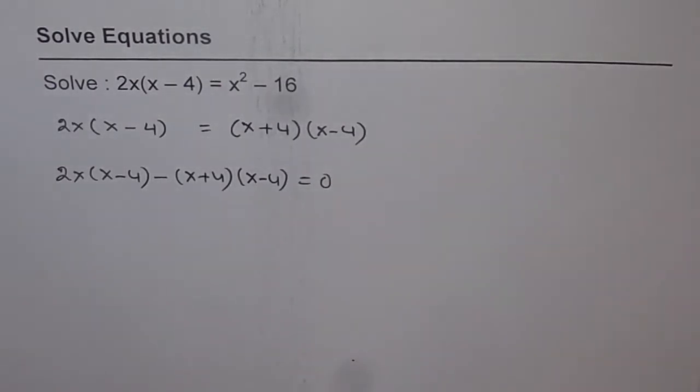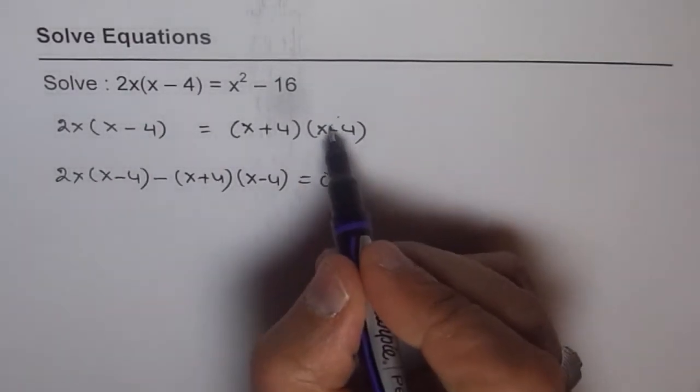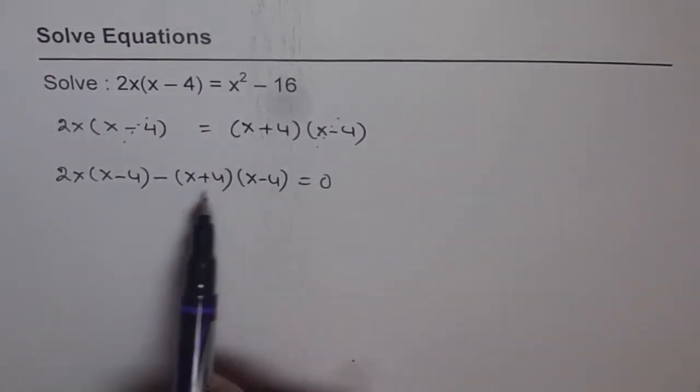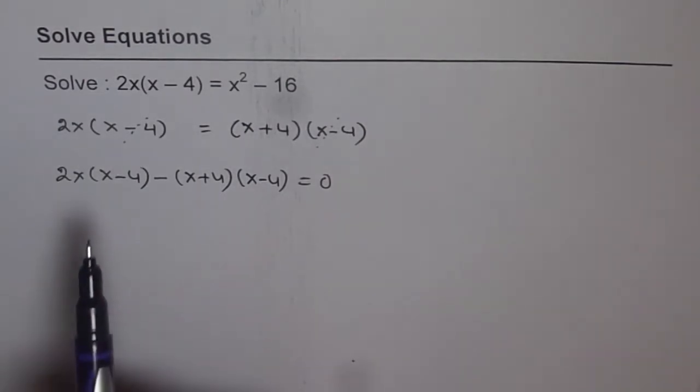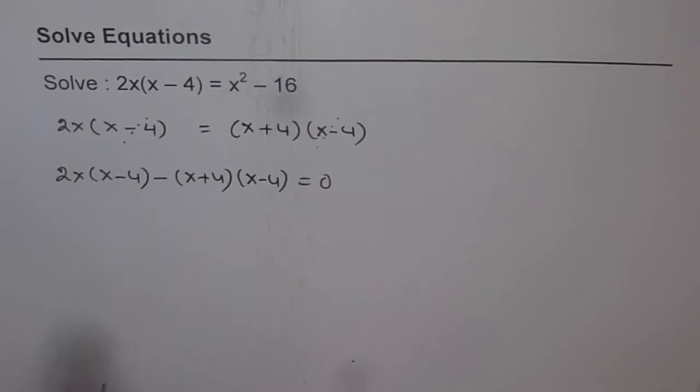Now I have seen at this stage some of the students making a mistake. So what they do is when they are trying to solve the equation, they cancel out these terms. If they cancel this out and then bring this x plus 4 on this side and try to solve it after that, then they have already eliminated one of the solutions.